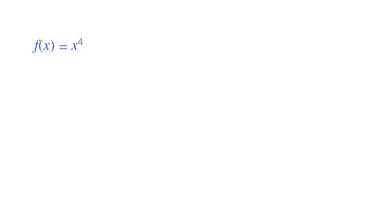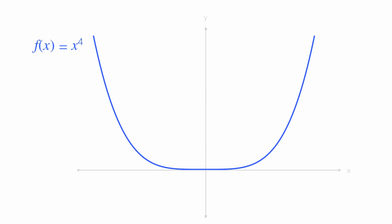I'll plot x on the x-axis and y on the y-axis. The graph of x to the fourth power looks like this. If I pick a point, x, the associated y value would be x to the fourth. f of x is equal to x to the fourth power.